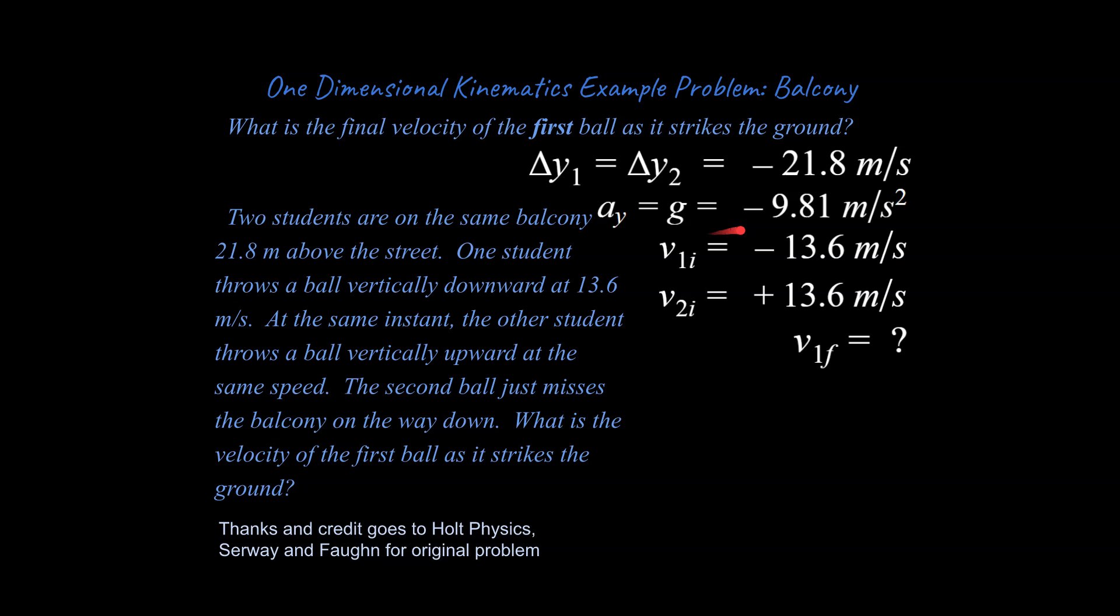And we also know our acceleration due to gravity even though the problem doesn't tell us that. It's going to be minus 9.81 meters per second squared and we're going to write down our velocities. One of these is going to be positive. The other one is going to be negative. And the question is asking for what is our final velocity for the first object.